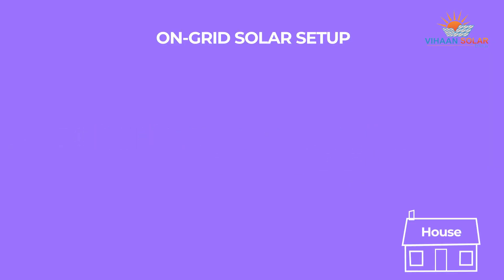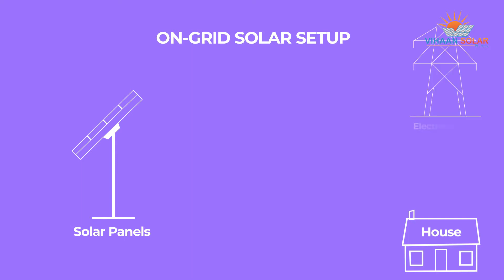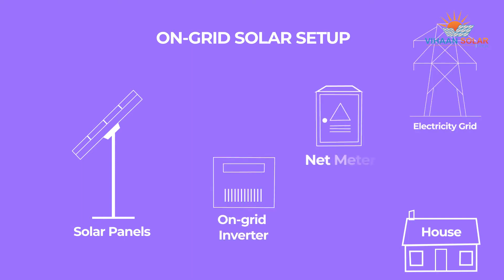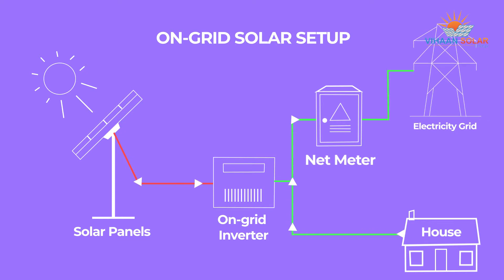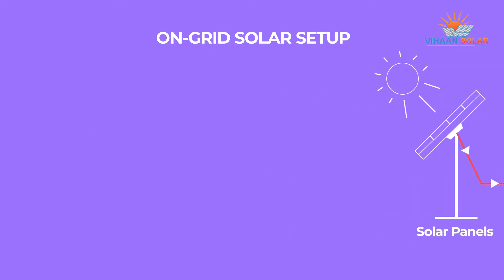On-grid solar setup: the basic components are solar panels, electrical load, on-grid inverter, and bi-directional net meter. The solar panel converts solar energy into DC current and the inverter converts the DC current into AC current to power your residential or industrial load. Any excess current generated by the solar panels is exported back to the grid, and the exported units are added as credit to your electricity meter and can be used back when needed.